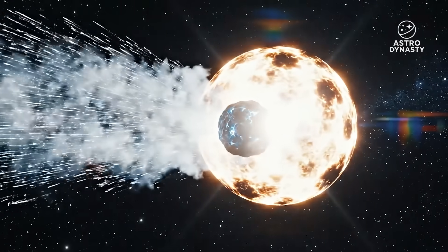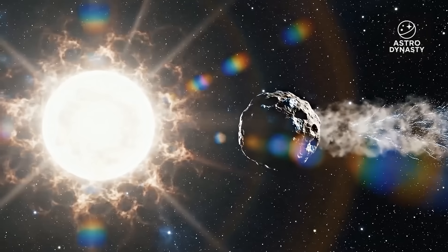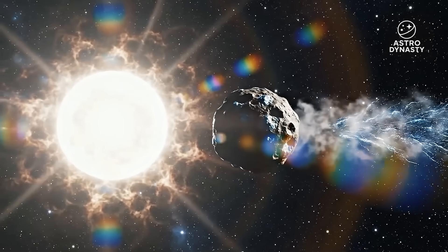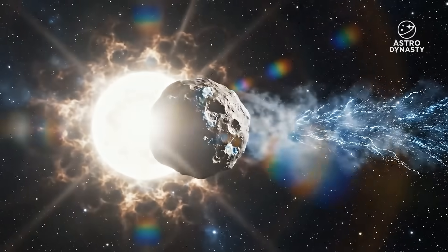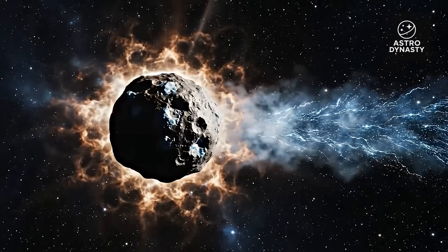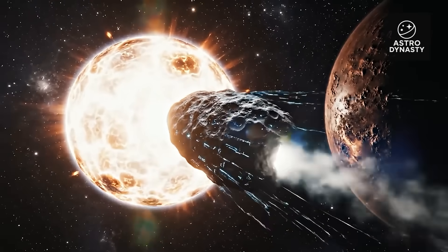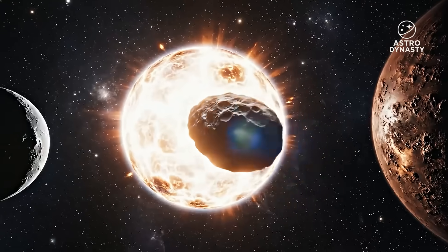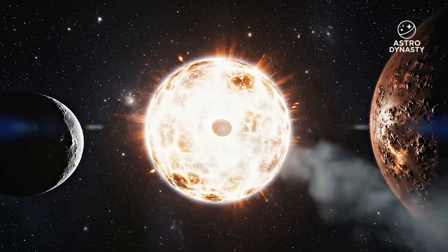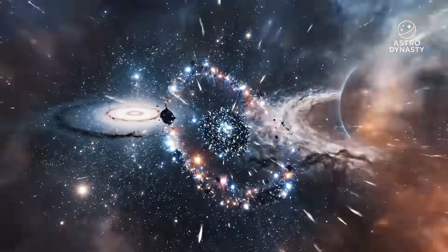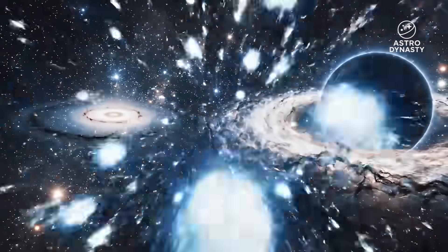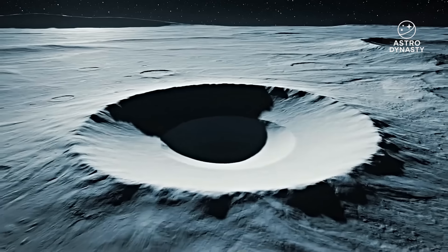It's worth remembering what its predecessors taught us. Oumuamua: flat, dark, tumbling, accelerating without visible exhaust. Borisov: ordinary, icy, cometary - the reassuring exception. And now 3i Atlas: mathematically precise, energetically active, and disobedient. Each one rewriting what we think we know about how the universe behaves.